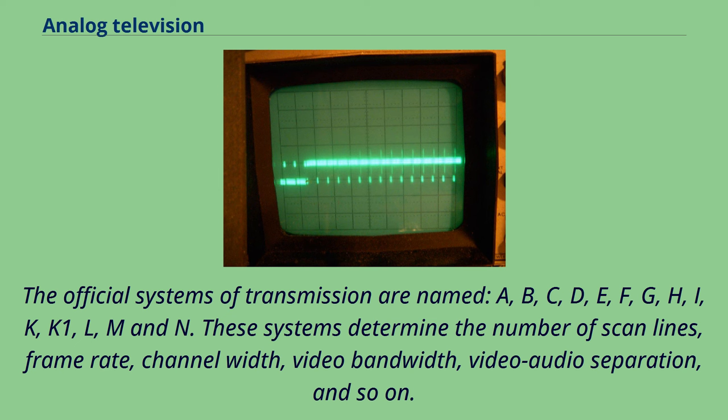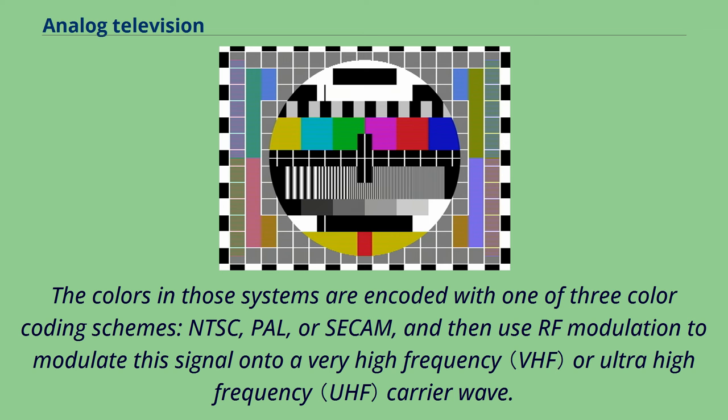These systems determine the number of scan lines, frame rate, channel width, video bandwidth, video-audio separation, and so on. The colors in those systems are encoded with one of three color coding schemes: NTSC, PAL, or SECAM, and then use RF modulation to modulate this signal onto a very high-frequency or ultra-high-frequency carrier wave.